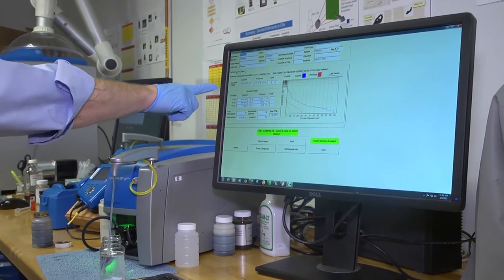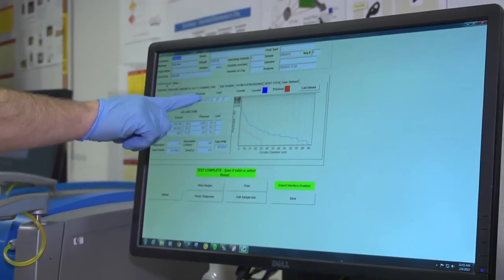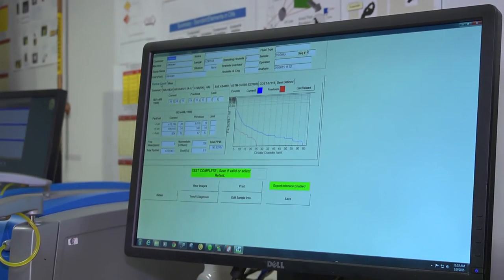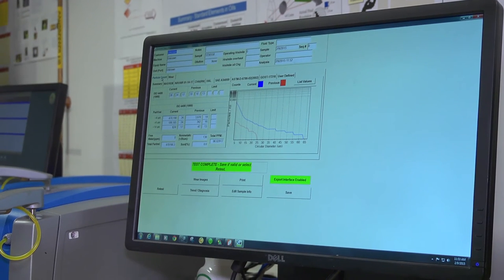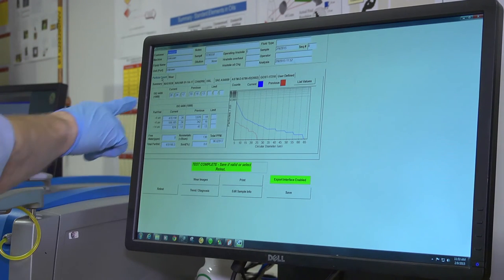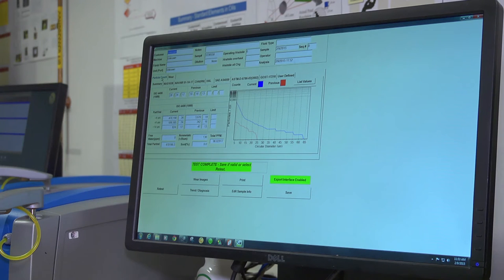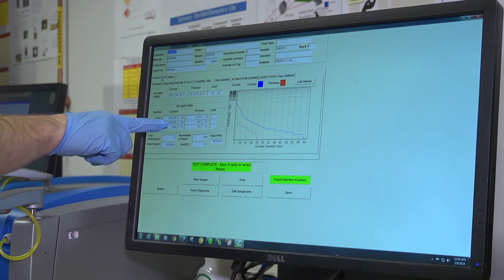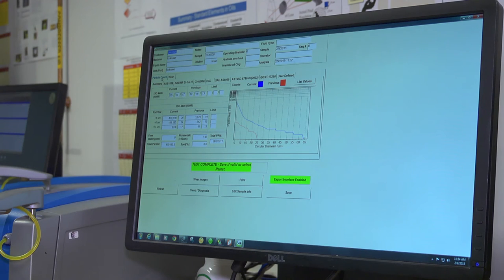What we have here on the basic tab is the particle count itself. Here, the ISO codes are summarized. There's a previous ISO code. If one was to run it as an asset, it would then compare it to the previous ISO code. But we just ran it as a straight sample, so that's the current measurement. So the ISO codes, particles greater than 4, greater than 6, greater than 14 microns. You can see that that's a fairly dirty sample with 470,000 particles greater than 4 microns with an ISO code of 26, 24, and 17.